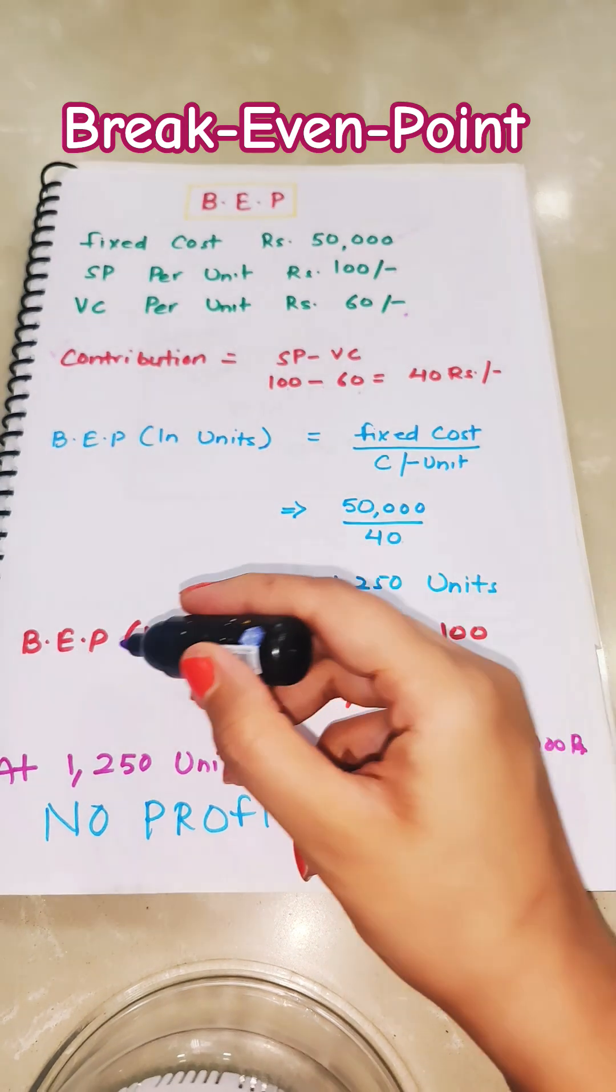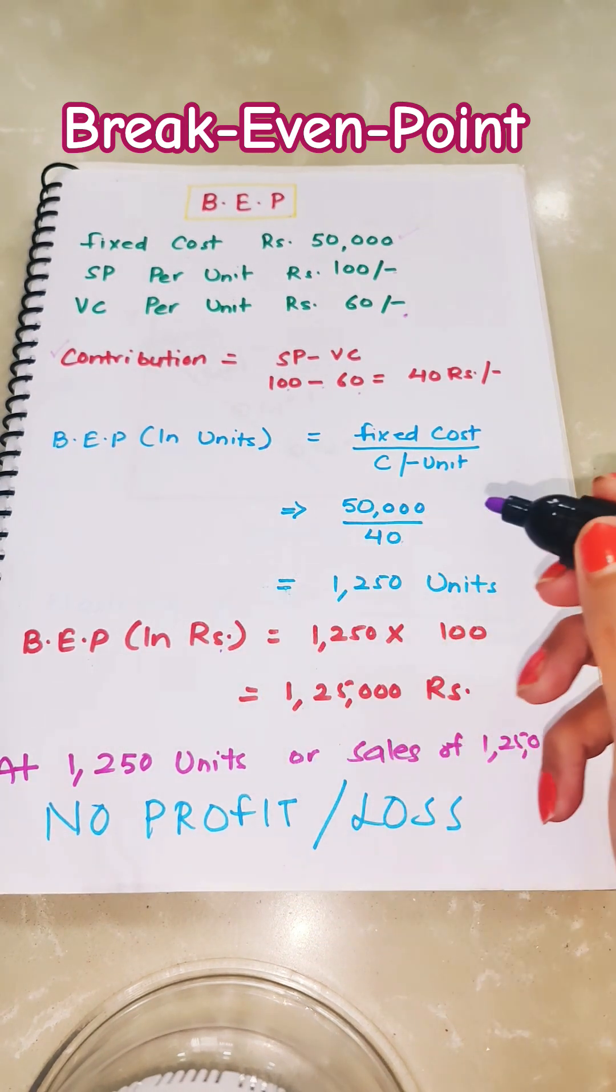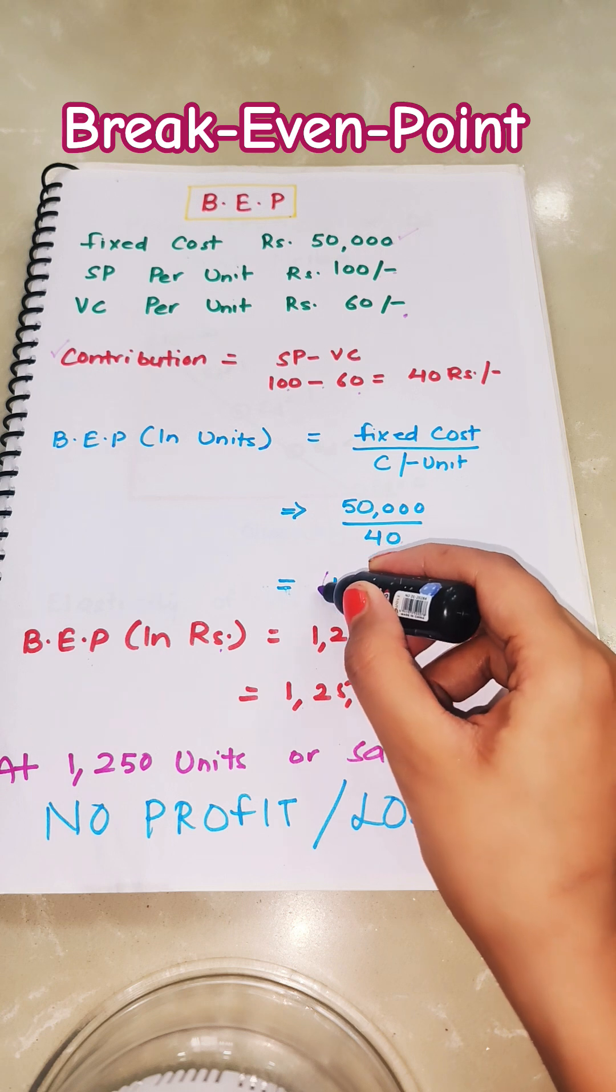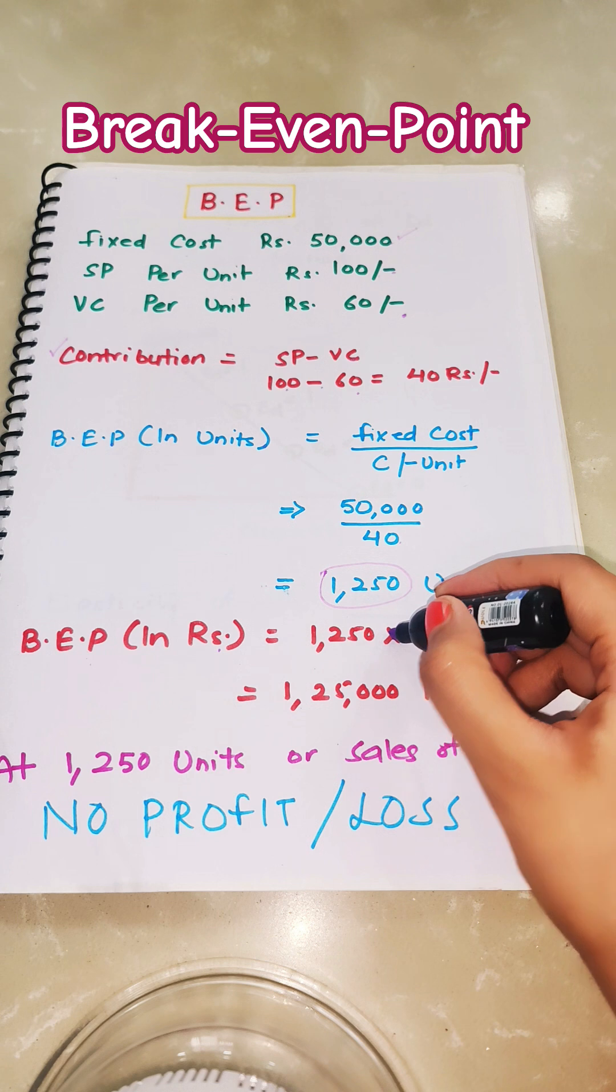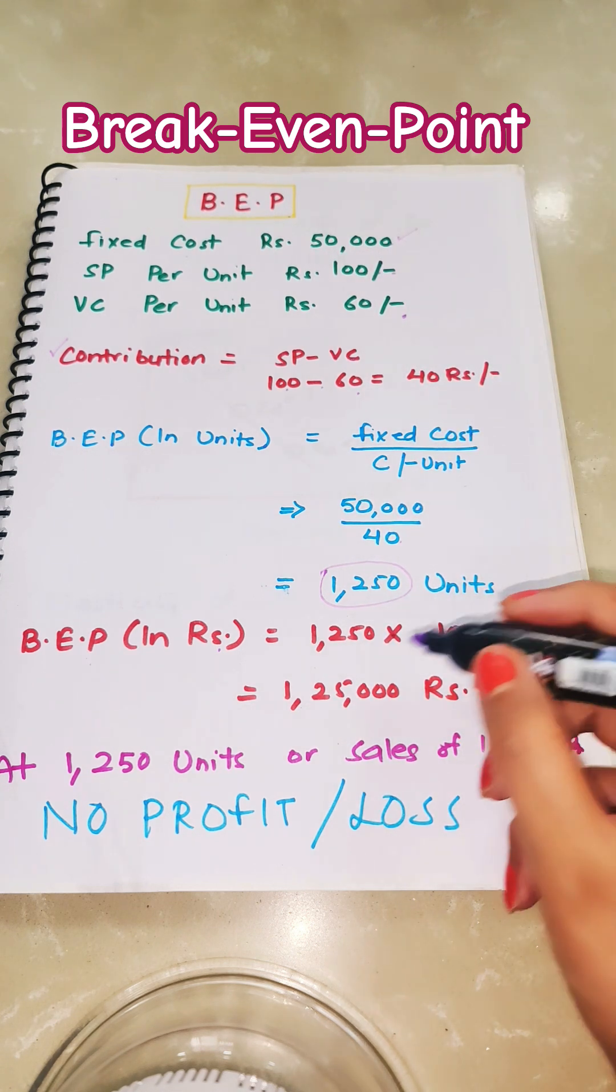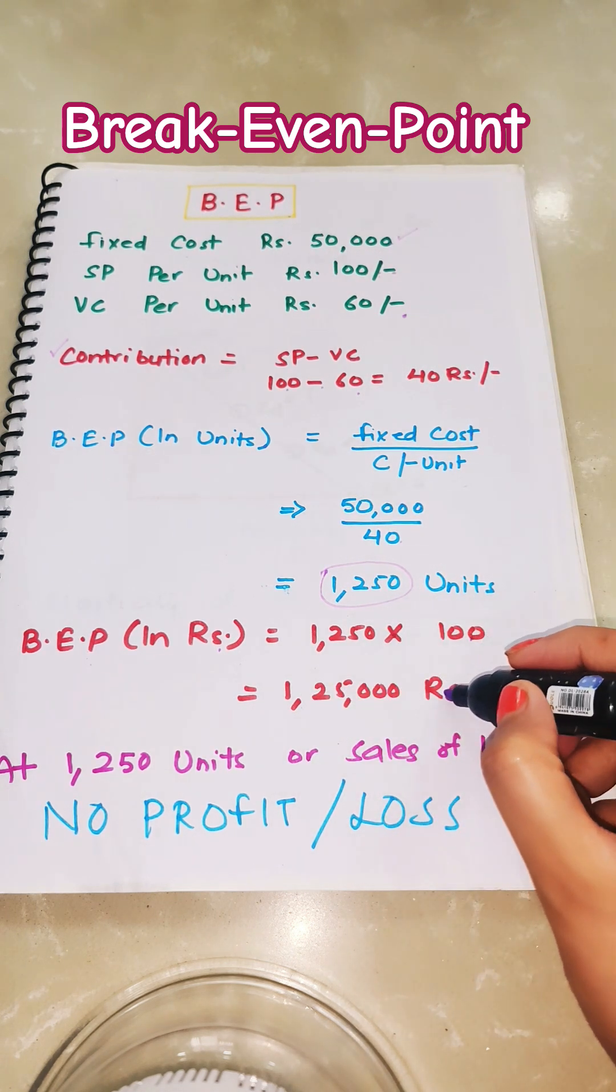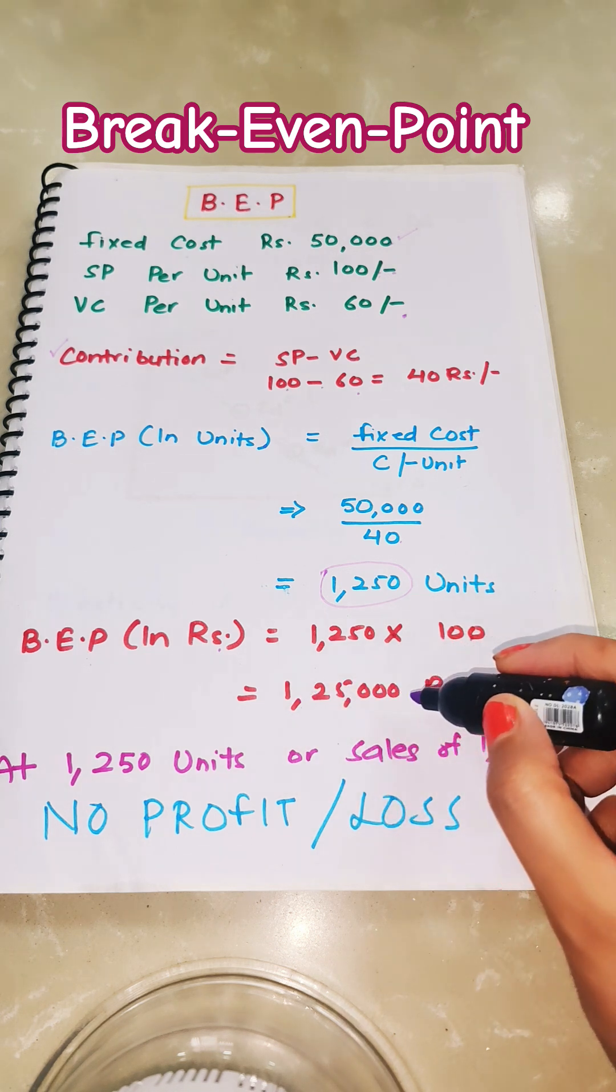If we want to calculate break-even point in rupees, we can take the break-even point in units we just calculated and multiply it by selling price per unit, which is Rs. 100. So break-even point in rupees is Rs. 1,25,000.